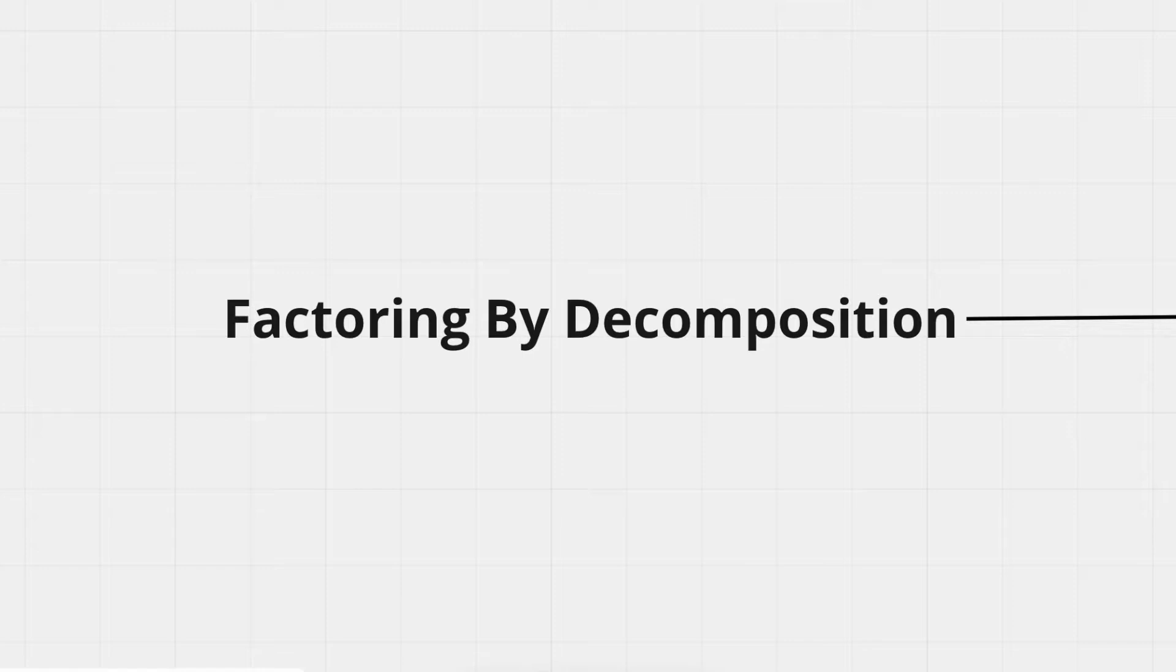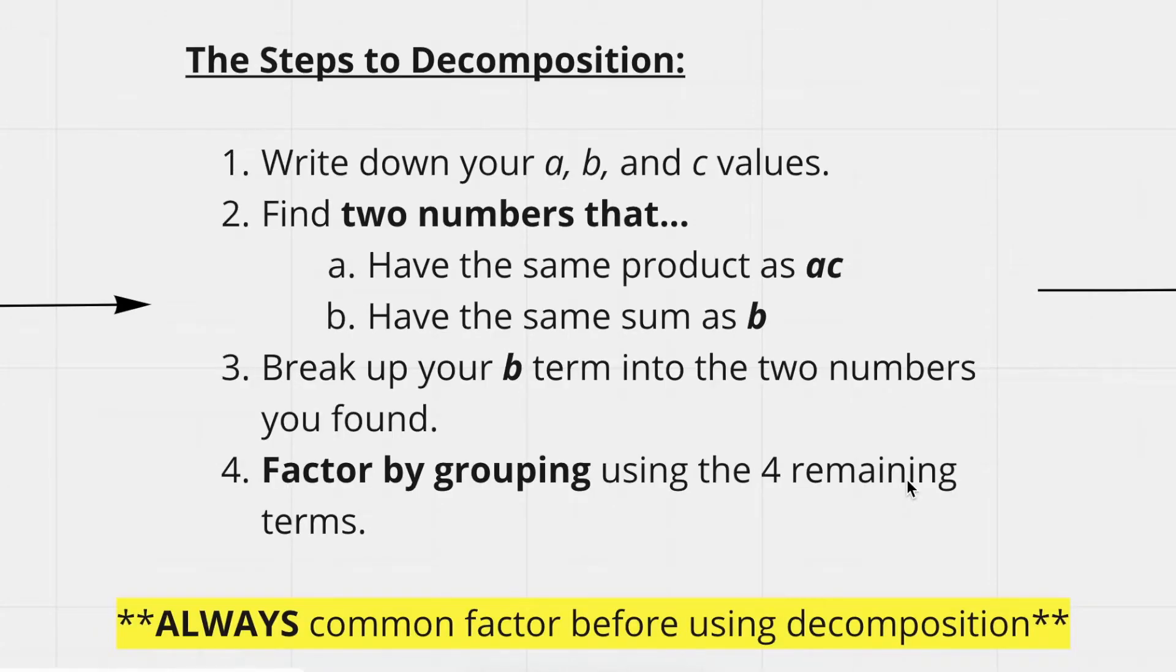Now without further ado, let's get into it. Here are the steps to factoring by decomposition. Your first step is to write down your a, b, and c values, which are just the coefficients on each of the terms in standard form.